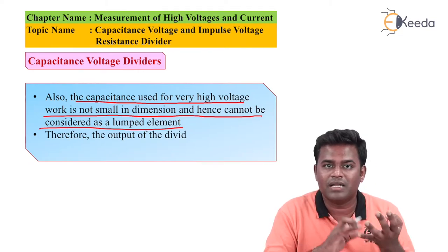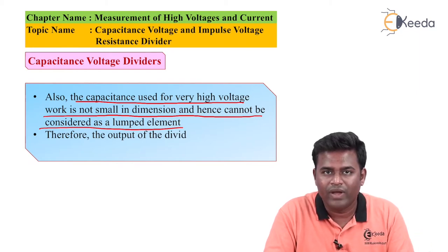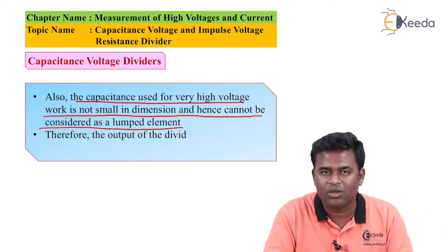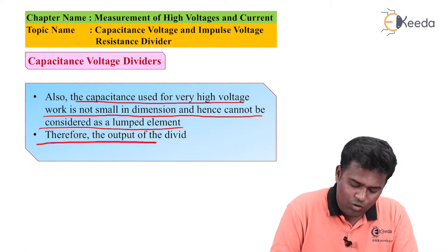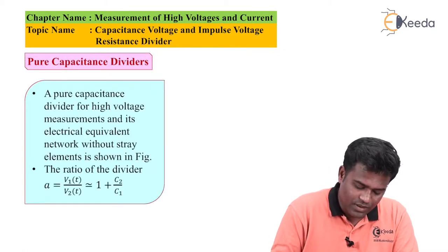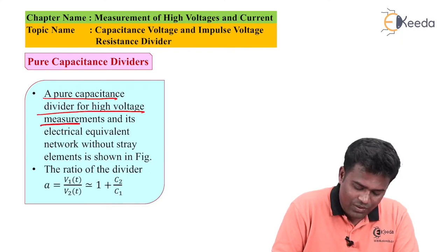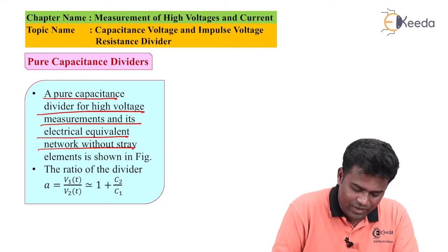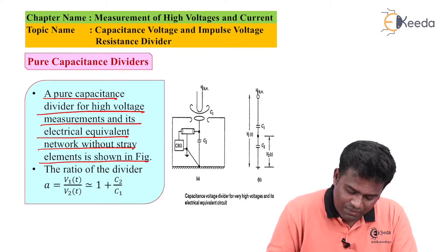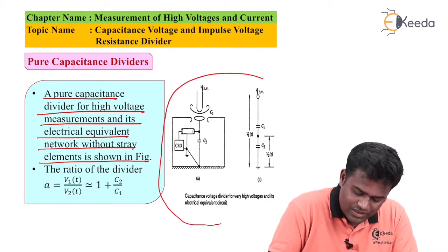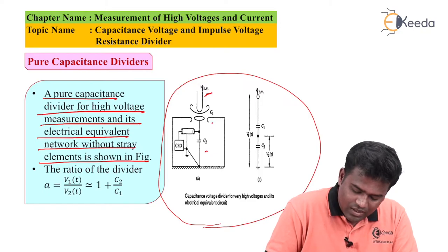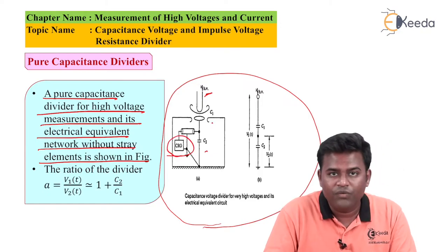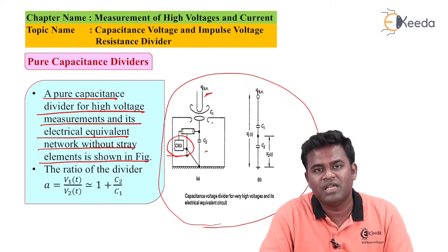Lumped elements are resistance, capacitance, and inductance. When there are larger sized capacitors or the voltage level is high, the capacitance must be taken into account. Therefore, the output of the divider can be given by a pure capacitance divider for high voltage measurement, and its electrical equivalent network without stray elements is shown. This is the capacitance voltage divider for very high voltages, with capacitor C1 and source CHV.